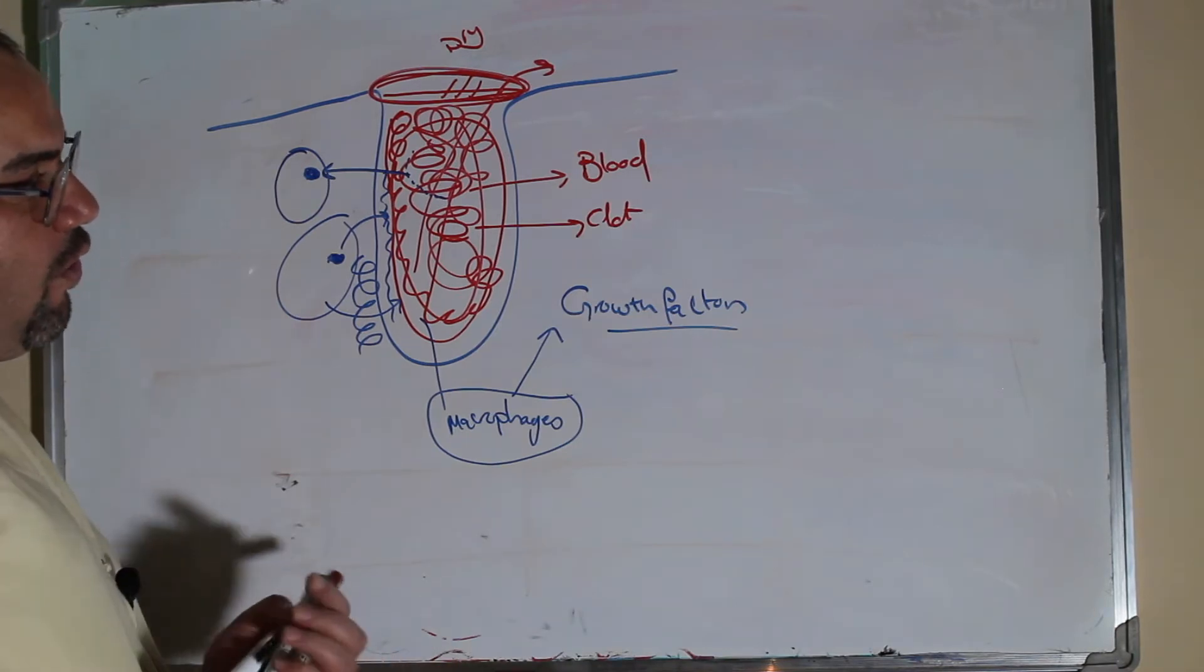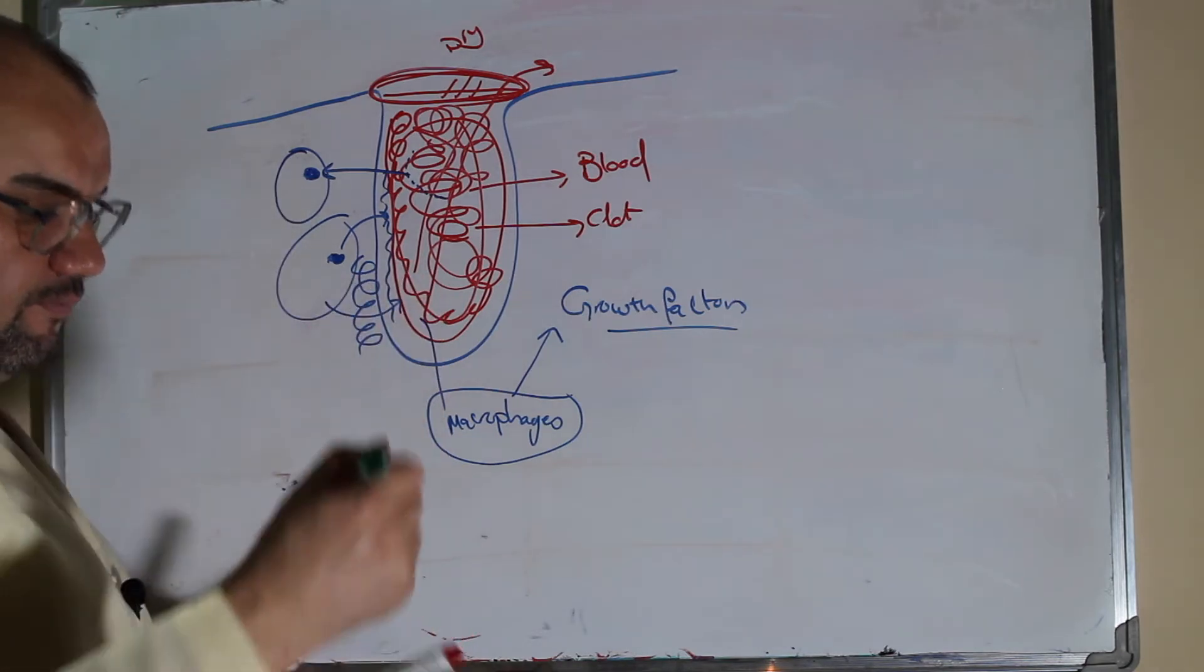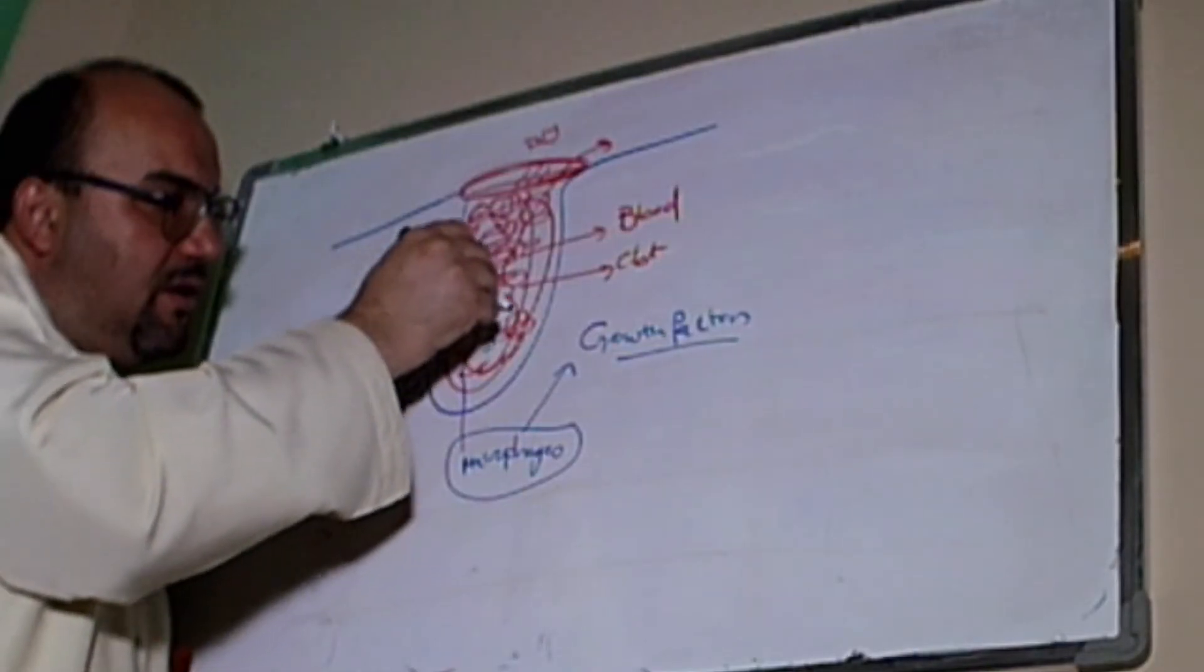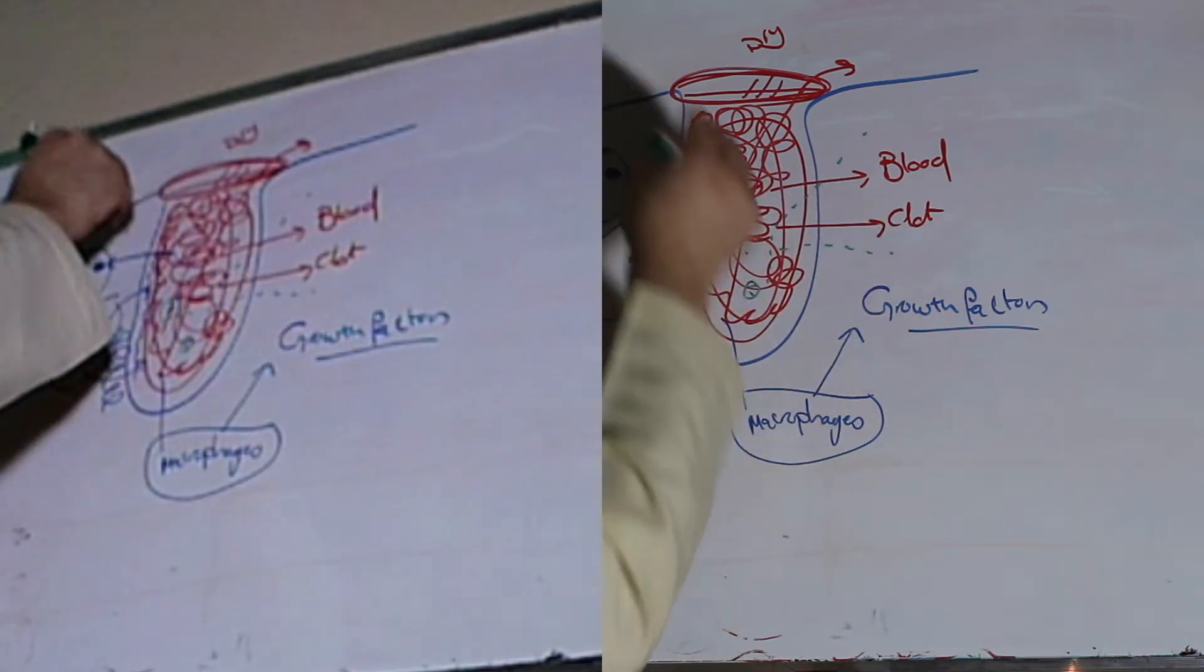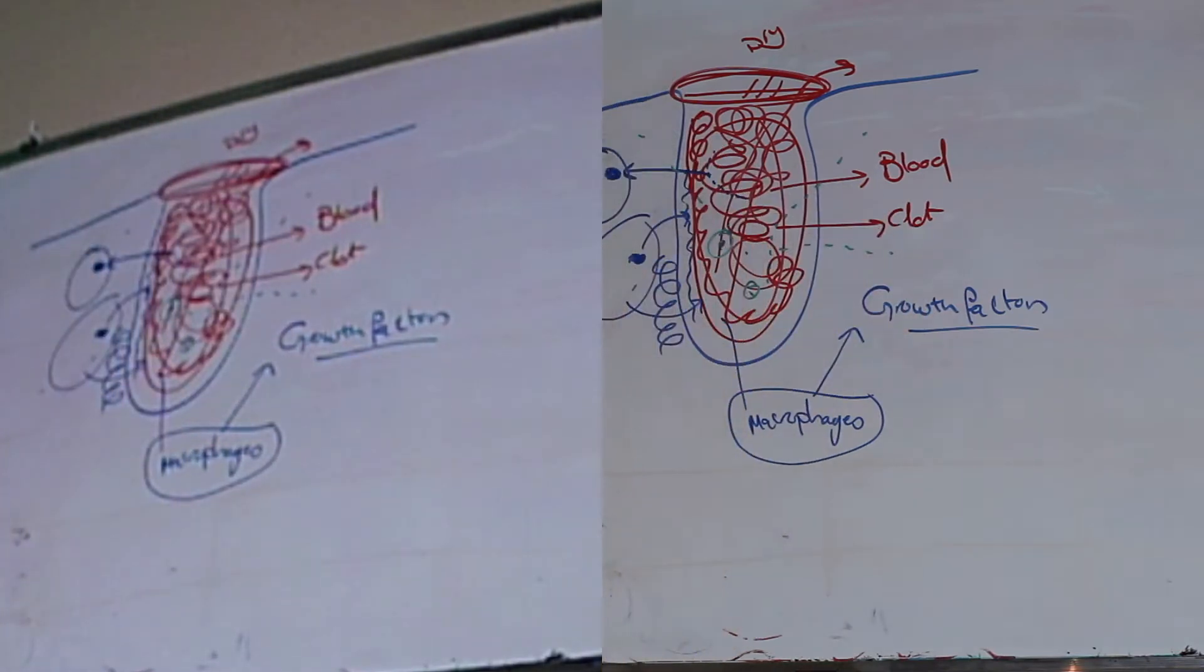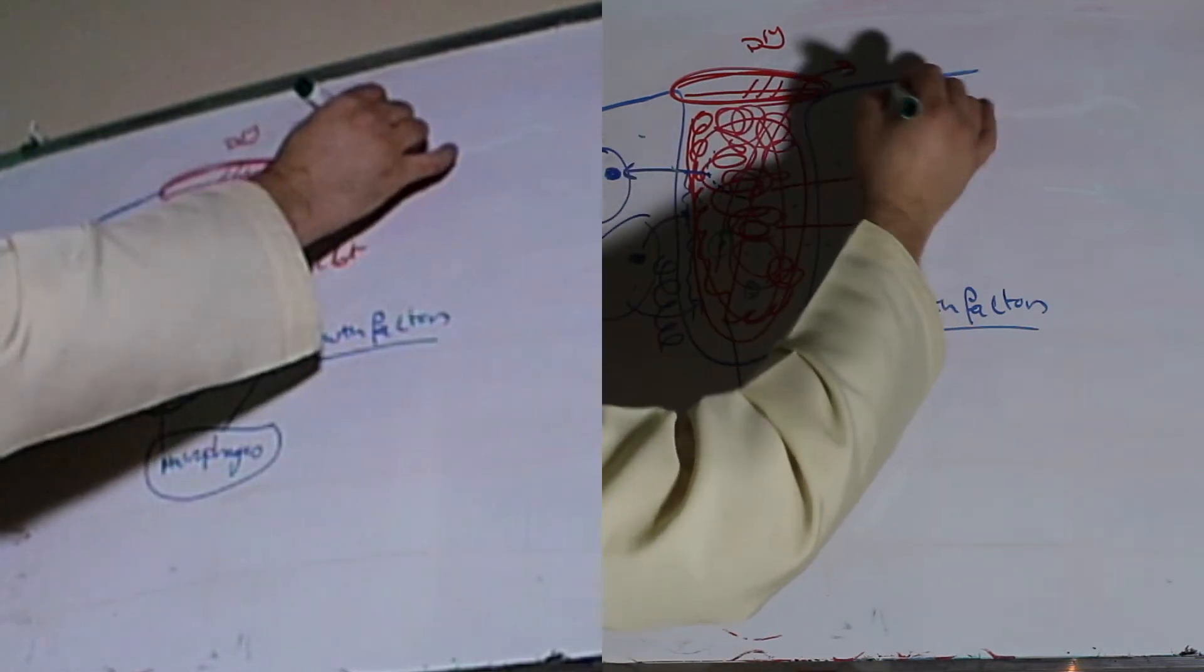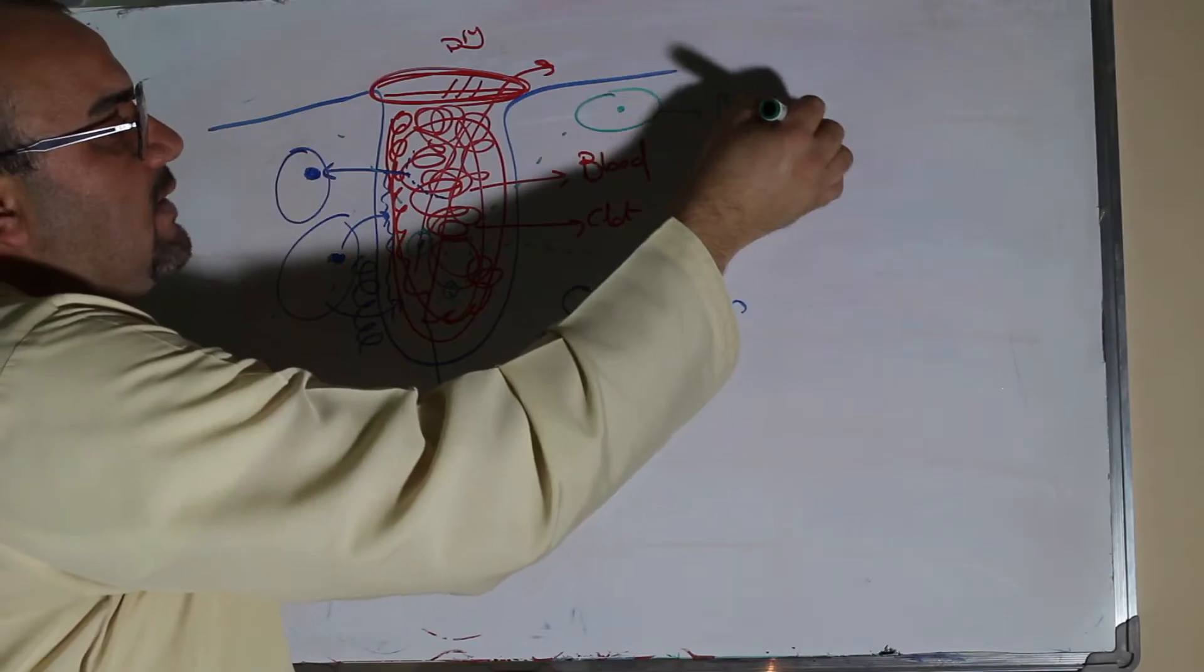These growth factors will pass from macrophages, which start to be here to the body, and it will attract two things that will happen at the same time. First one, a type of cells called fibroblasts.